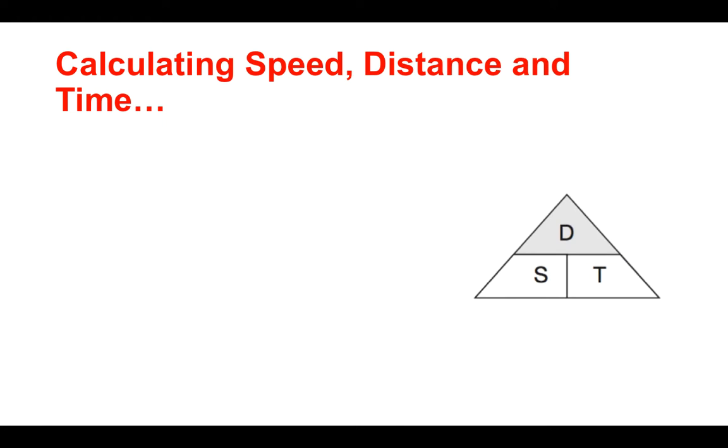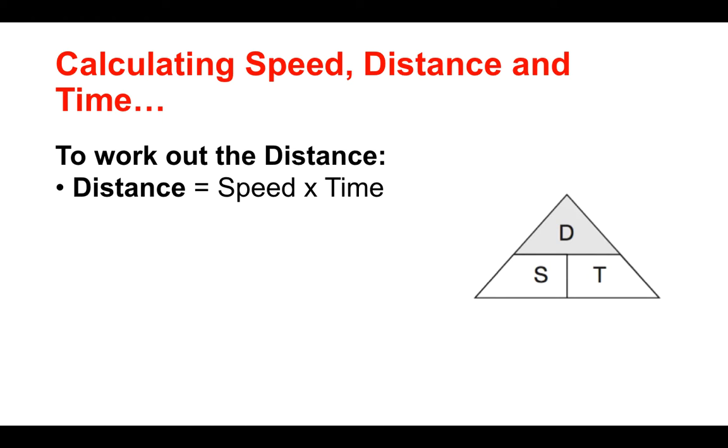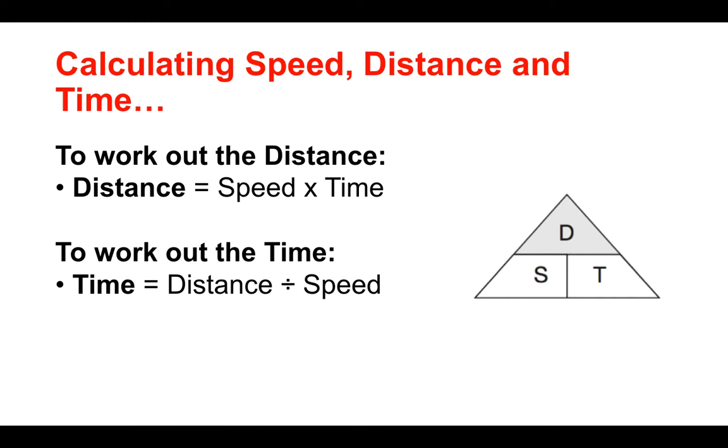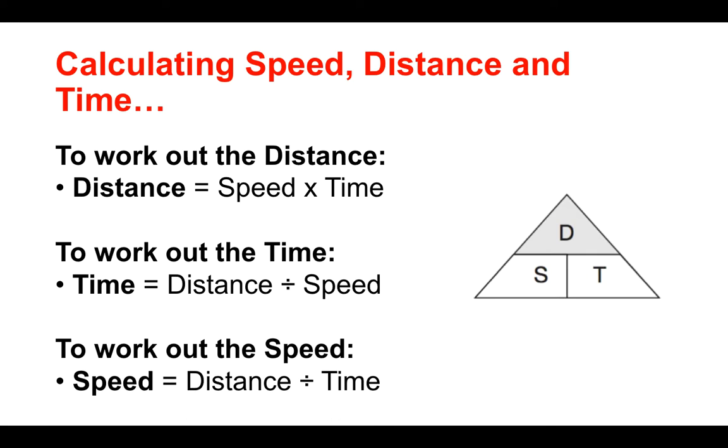Okay, so if we're calculating speed, distance and time, just to recap that, to work out the distance, then the formula is speed multiplied by time. To work out the time, then the formula is distance divided by speed. And finally, to work out the speed, it's distance divided by time.